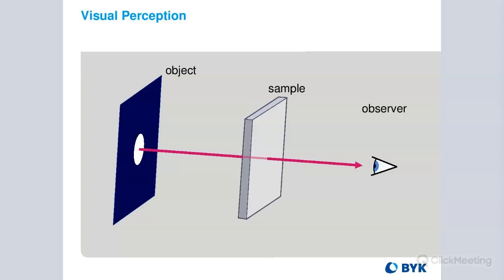In this case, we're talking about light passing through an object. Here we have our sample — the clear material that we're seeing an object through — and that sample is going to affect the light as it passes through. What that material does to the light is going to affect how the observer sees it.